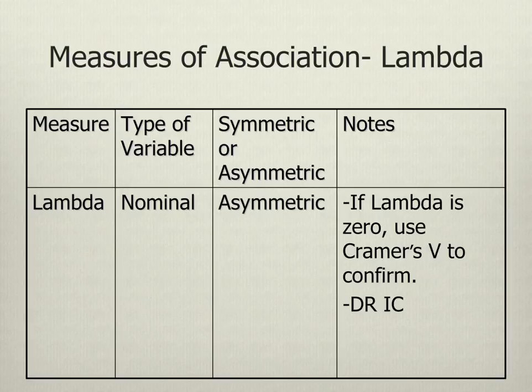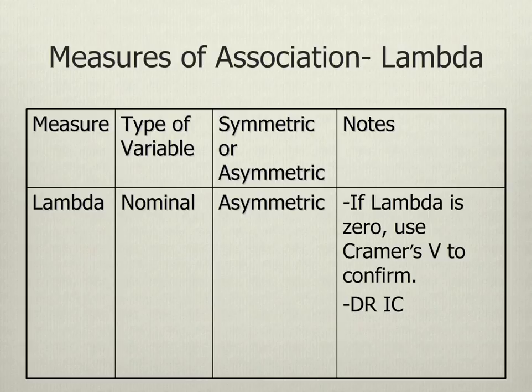Next, I'm going to go over some measures of association, and then we're going to talk about which ones to focus on for this class. The most basic measure of association for nominal variables is lambda. Lambda works best for nominal-by-nominal associations. Since it's only for nominal variables, there's no direction — it's asymmetric. Sometimes with SPSS you get a 0.00 value for lambda; in this case, use Cramer's V instead to confirm, as SPSS can glitch when using lambda. Also, it's important with lambda to follow the Dr. Ick rule — it matters which is the dependent and which is the independent.